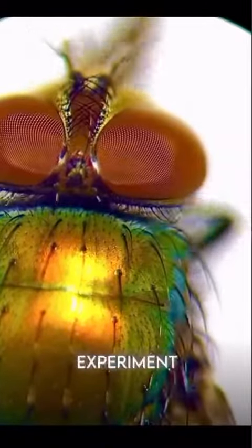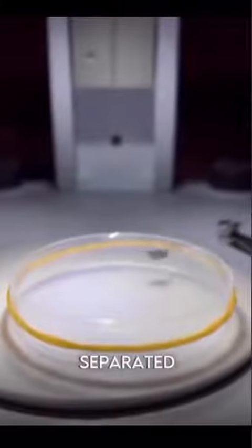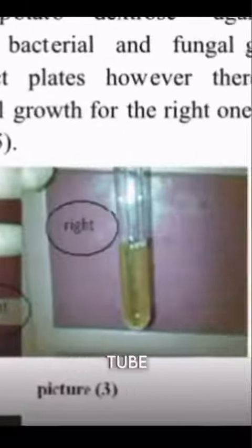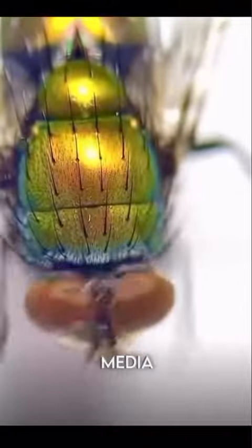Scientists conducted an experiment where they took four flies. The left and right wings for each were separated. Each fly wing, left and right, was dipped in a sterile labeled test tube containing five milliliters of sterile nutrient broth media.